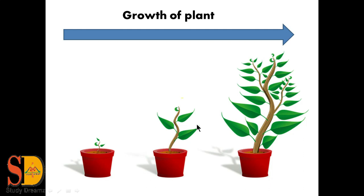The next example is the growth of a plant. A plant grows from a seed and shows changes from seed to plant and plant to tree. But we cannot get back a seed from the tree because it is impossible. Similarly, growth of animals, growth of human beings, and growth of plants — these are all irreversible processes.